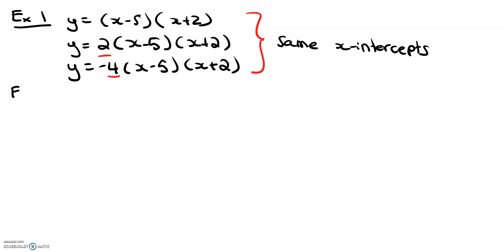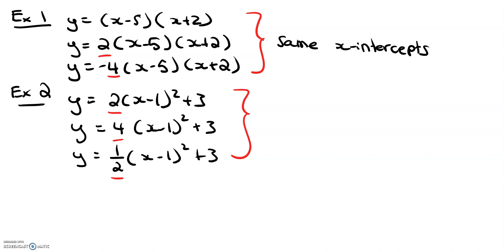Okay, moving on to example two. I have the equations: y equals 2 times x minus 1 squared plus 3, y equals 4 times x minus 1 squared plus 3, and y equals 1 half times x minus 1 squared plus 3. Here I can see that these quadratic functions are written in vertex form, so I know that because in vertex form my value of a is being varied in this format, I can deduce that these are going to have the same vertex and same axis of symmetry. So that's what I can deduce about this family here in example two.